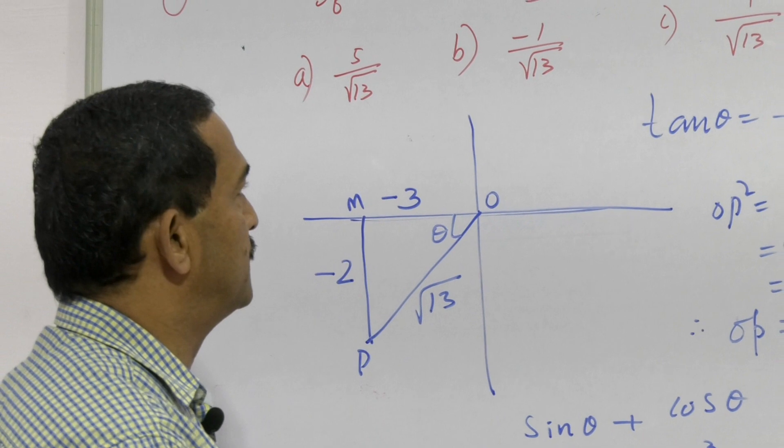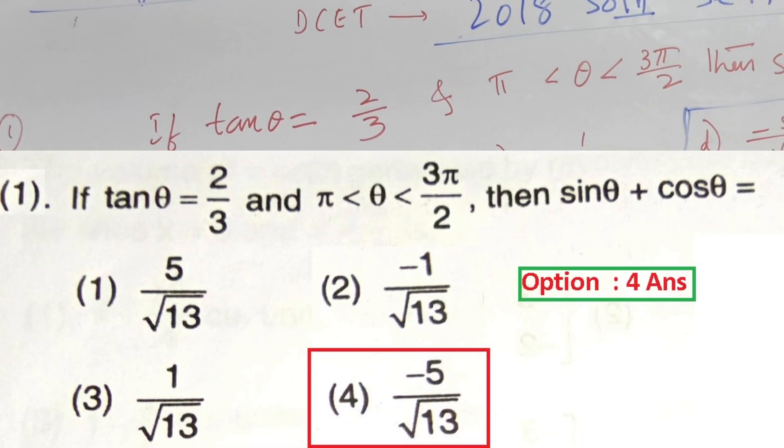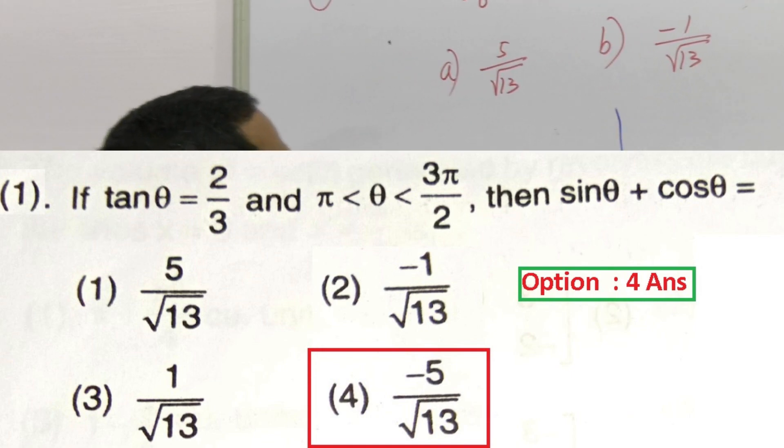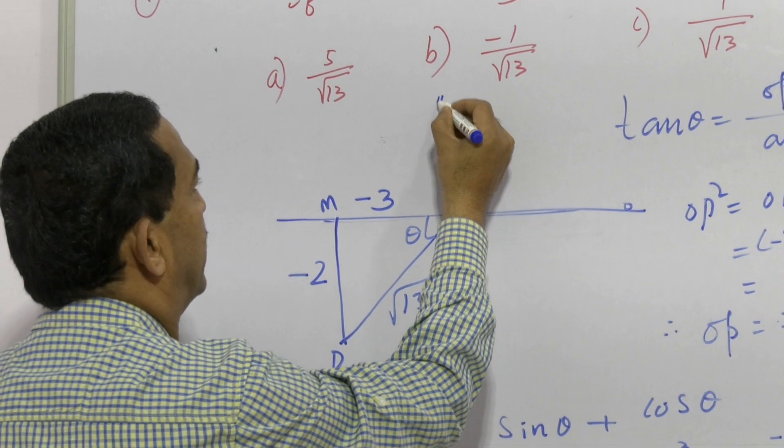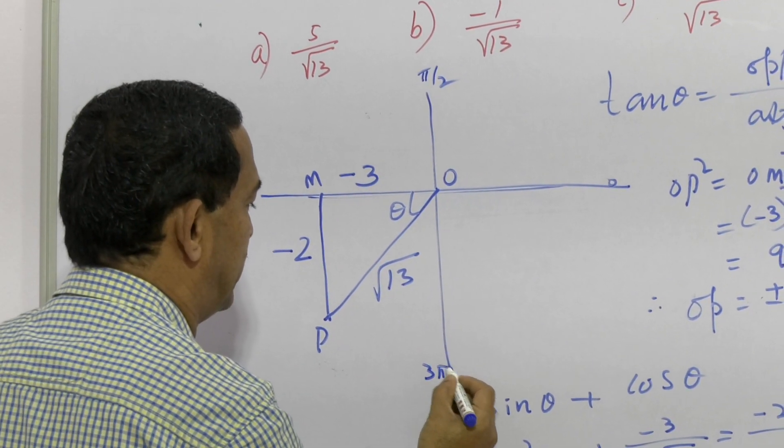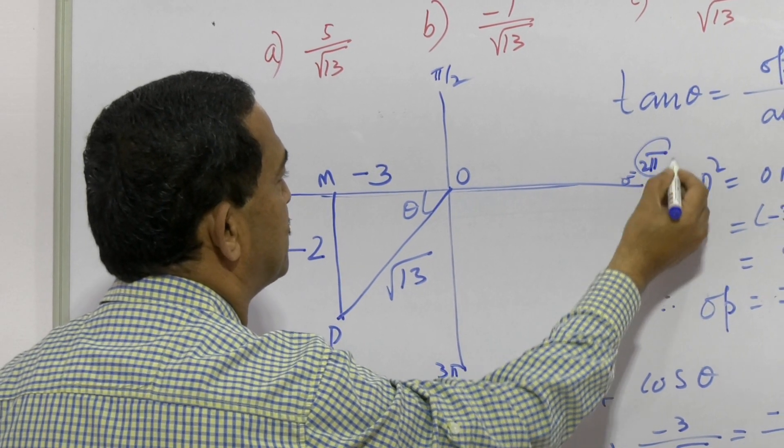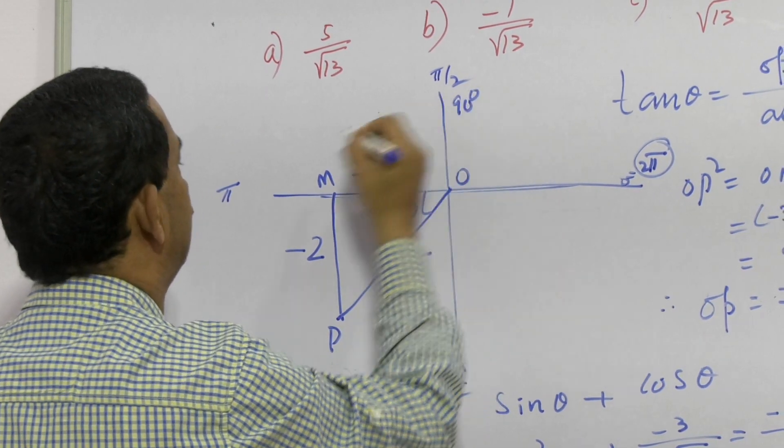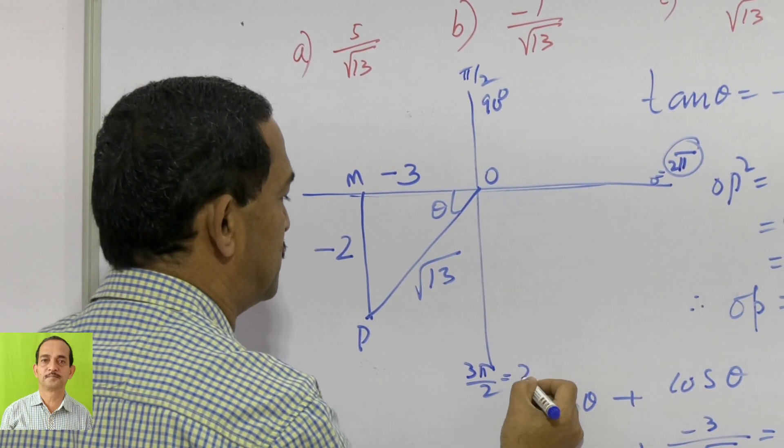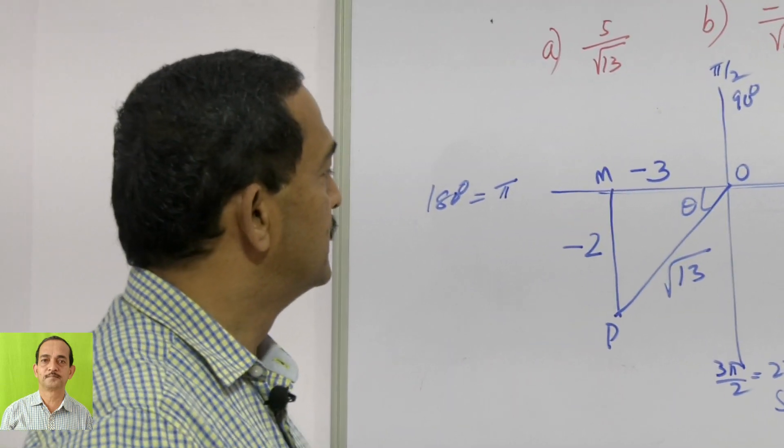Can you understand how we evaluate when π less than theta less than 3π/2? This means it lies in the third quadrant. This is 0 degrees, this is π/2, this is π, this is 3π/2, this is also equal to 2π. π/2 means 90 degrees, π means 180 degrees, 3π/2 means 270 degrees. So this angle theta lies in the third quadrant.